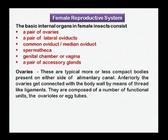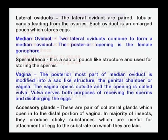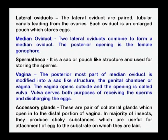The ovaries are two in number and they are attached to the tergum or dorsal side of the body with a filamentous structure known as ligaments. The function of the ovaries is production of eggs, which are produced in egg tubes known as ovarioles. Both ovaries are united posteriorly by the oviducts, which may be lateral or median oviducts, and these oviducts unite at a common place in the form of a common oviduct.